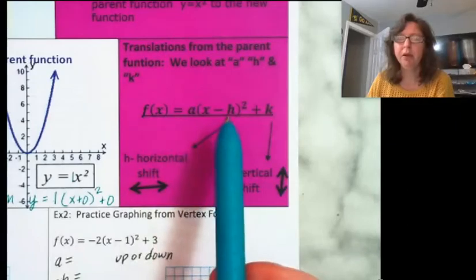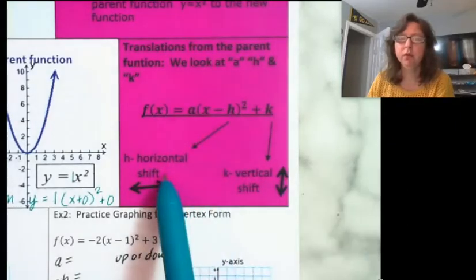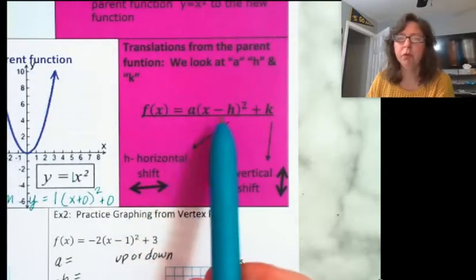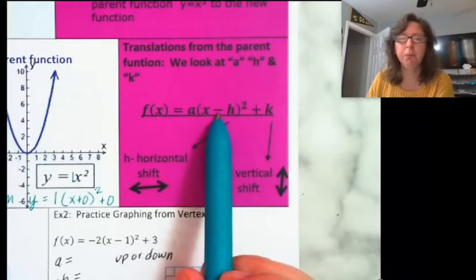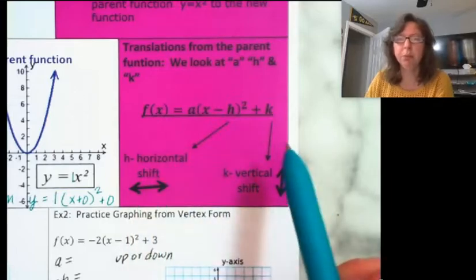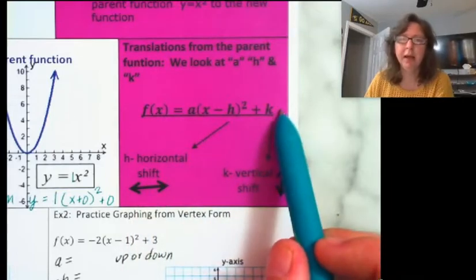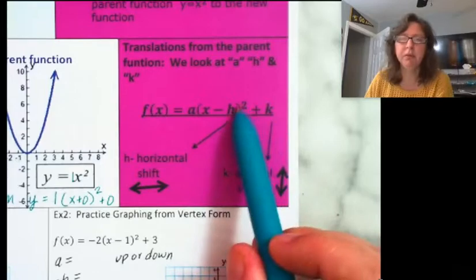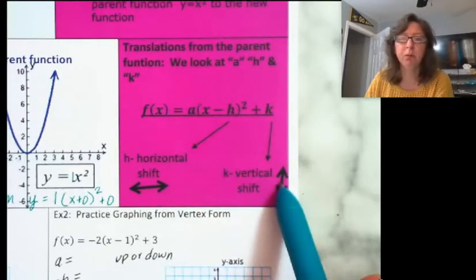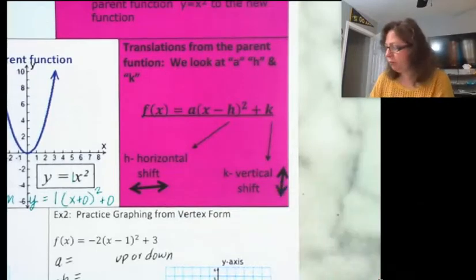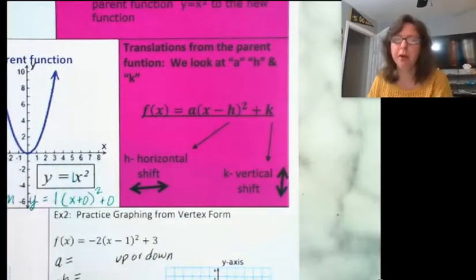The h value is the horizontal shift. Whenever we come out of these parentheses, we're going to need to change the sign of the h value — I'll show you that in our first example. And then k is our vertical shift. This tells me how much it moves left and right; this tells me how much it moves up and down from the parent function.